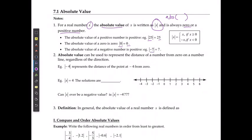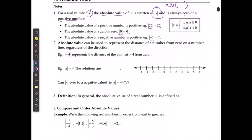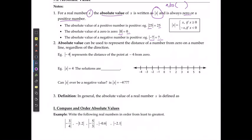The absolute value of a negative number is the positive version of that number. We use absolute values to represent the distance from 0 on a number line, regardless of whether we're going left or right. For example, the absolute value of negative 4 represents the distance of the point negative 4 from 0 — if I started at negative 4, I need to travel 4 units to get to 0.